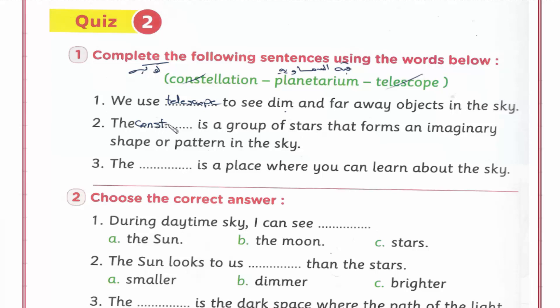Number three: A planetarium is a place where you can learn about the sky. ده المكان اللي ممكن نتعلم فيه عن السكاي - planetarium.